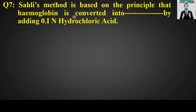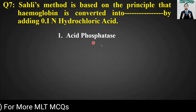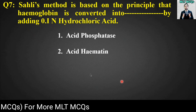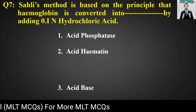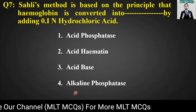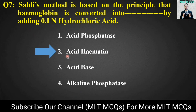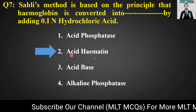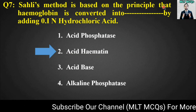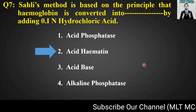MCQ number seven: Sahli's method is based on the principle that hemoglobin is converted into blank by adding 0.1N hydrochloric acid. Options are: acid phosphatase, acid haematine, acid base, or alkaline phosphatase. The right answer is option number two — acid haematine. Sahli's method converts hemoglobin into acid haematine.